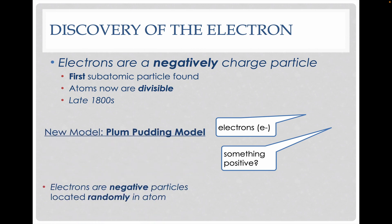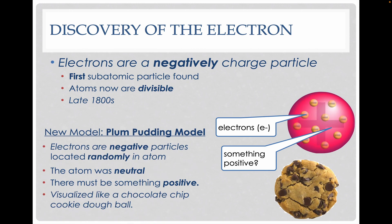After that, we discovered the electron, and when we discovered the electron we knew that there is actually more to that. So we had our first subatomic particle being found. The atoms are now divisible in this setup.